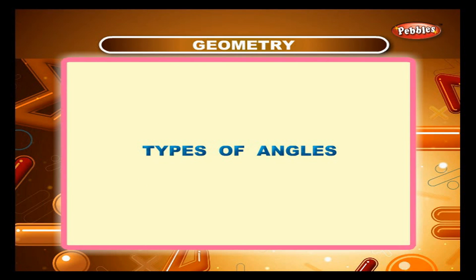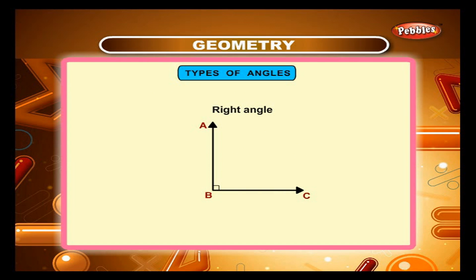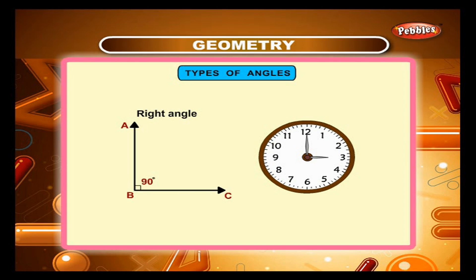Types of Angles. A right angle measures 90 degree. In a right angle, if one of the arm is horizontal, the other will be vertical. The hands of a clock make an angle of 90 degree at 3 o'clock.